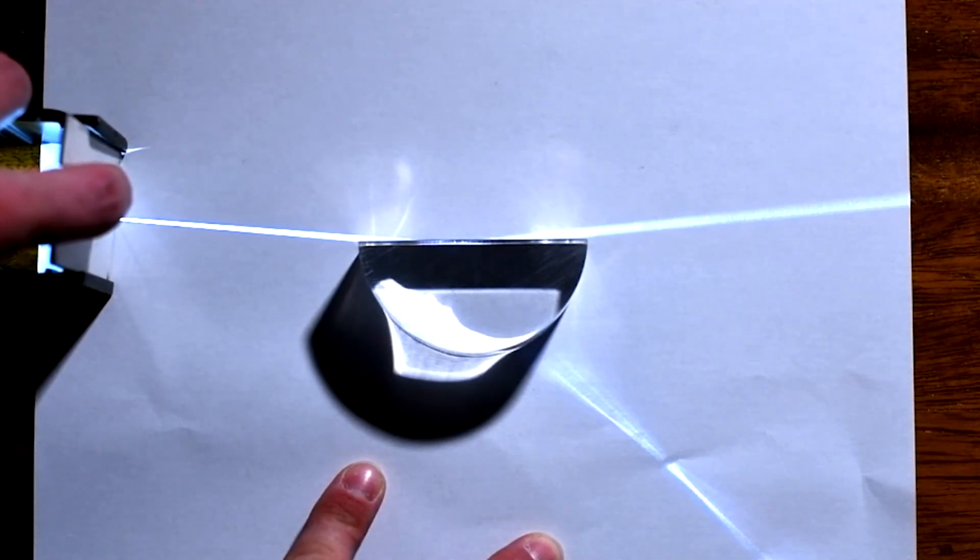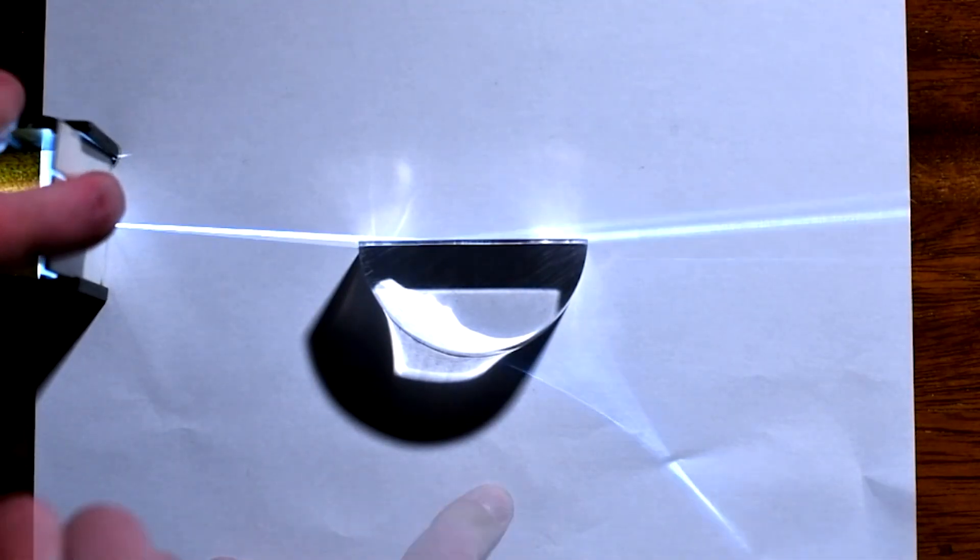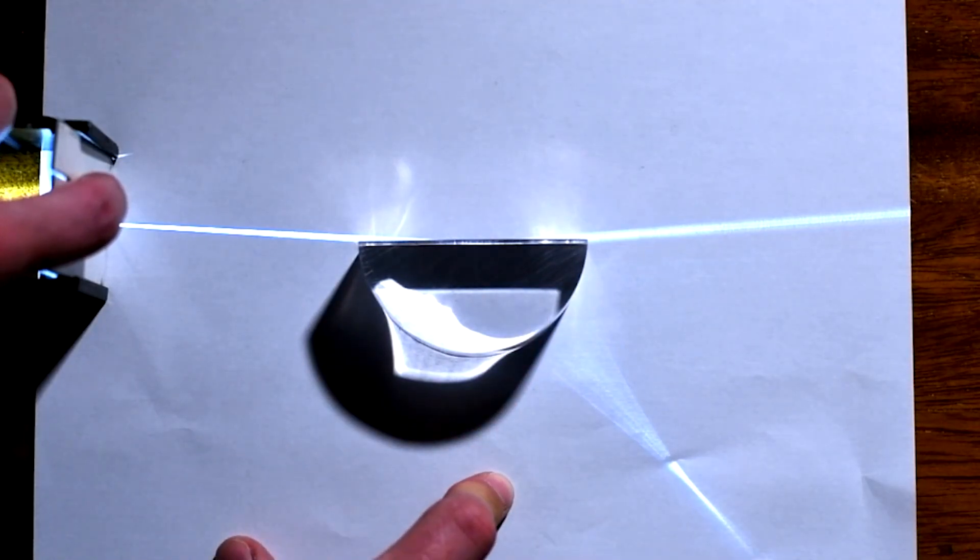What's my angle of incidence now? Well, it's effectively 90 degrees. Can you see it's still refracting out there? So we have a lot of reflection, but we still have some refraction.